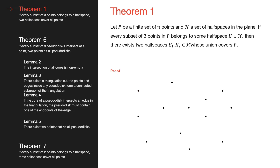In this section, we will cover some theorems related to half-spaces and pseudo-discs in the plane. Theorem 1 basically states that if every three points in our set are covered by some half-space, then there are two half-spaces that cover all the points in our set.